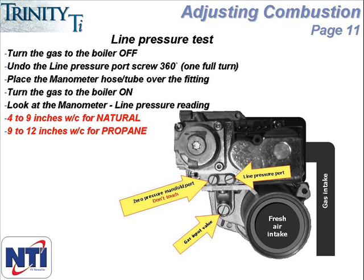You can then place the hose from your manometer over the line pressure port and turn the gas to the boiler back on to take a line pressure reading. It's recommended to leave the manometer in place through the rest of the installation, as you'll need it later to monitor line pressure during ignition.